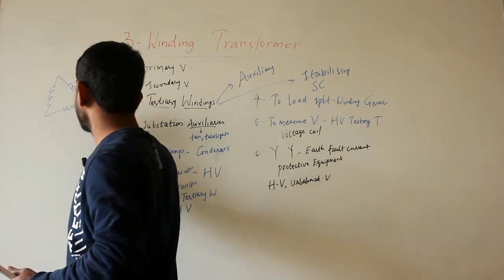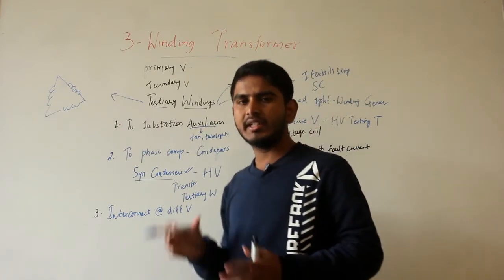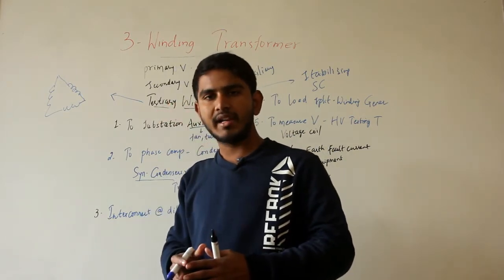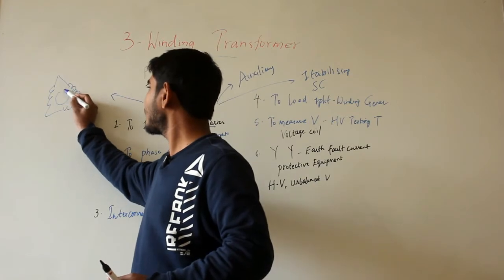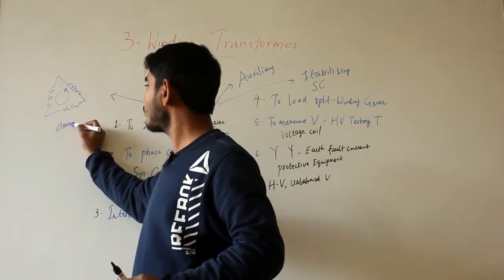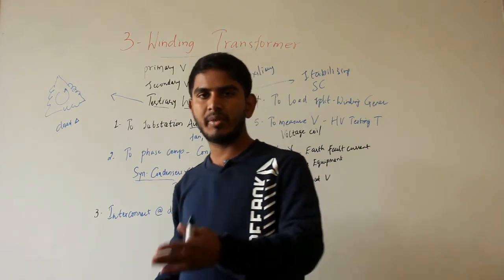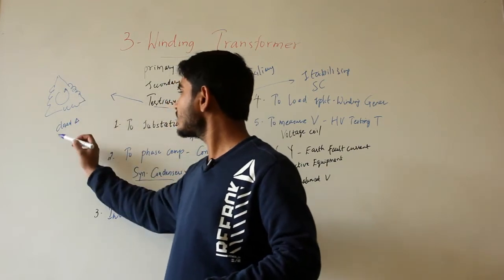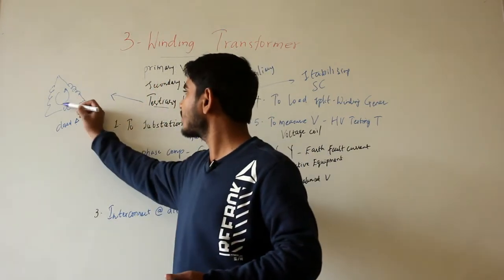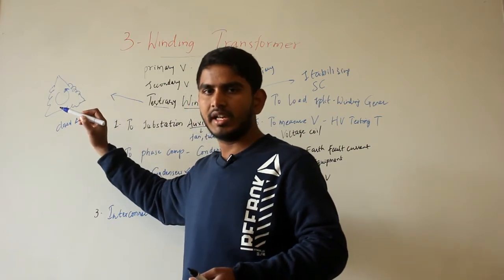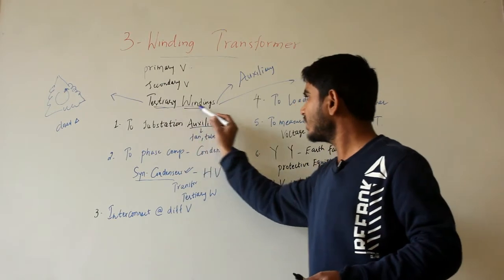The tertiary winding can also be called a stabilizing winding when it is employed to limit the short-circuit current in the star-star connected transformer. Normally, tertiary windings are delta-connected windings. Whenever a short circuit or fault occurs on the primary and secondary sides, any considerable unbalance in phase voltages can be compensated by the circulating currents flowing in the closed delta. The reactance of these windings must be large enough to limit the circulating currents and ensure the heating capacity of these windings.